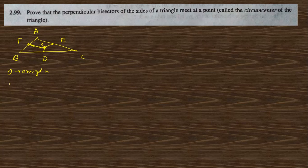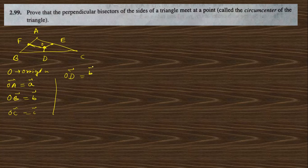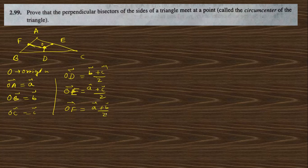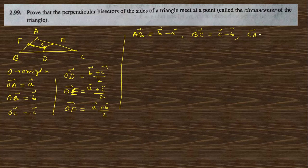The position vectors OA = a, OB = b, OC = c. The midpoint vectors are: OD = (b + c)/2 (midpoint of BC), OE = (a + c)/2 (midpoint of AC), and OF = (a + b)/2 (midpoint of AB). Also, AB = b - a, BC = c - b, and CA = a - c. We are given that OF is perpendicular to AB and OE is perpendicular to AC, and we need to prove OD is perpendicular to BC.